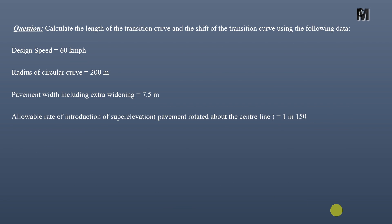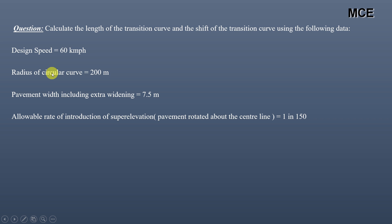Hello and welcome back to Master Civil Engineering. In this video you will learn how to calculate the length of a transition curve according to the IRC method. I have been given a question which states that we have to calculate the length and shift of the transition curve using the following data: design speed is 60 kilometers per hour, radius of circular curve is 200 meters, pavement width including extra widening is 7.5 meters, and allowable rate of introduction of super elevation when rotating the pavement about the center line is 1 in 150.